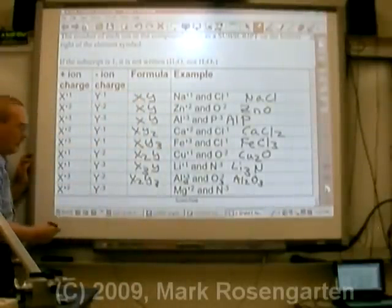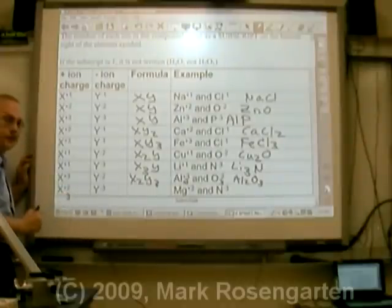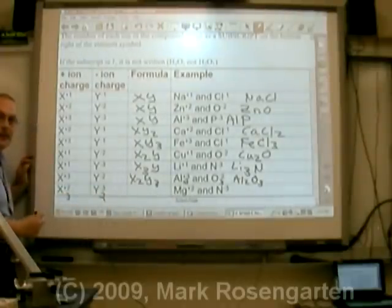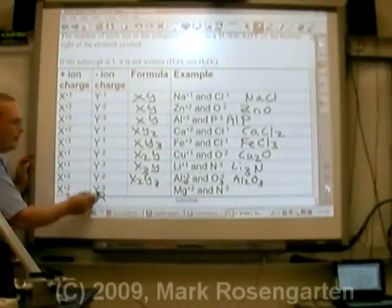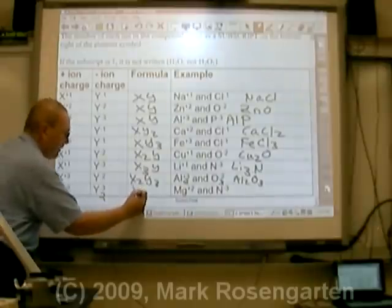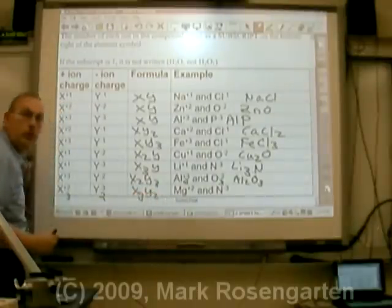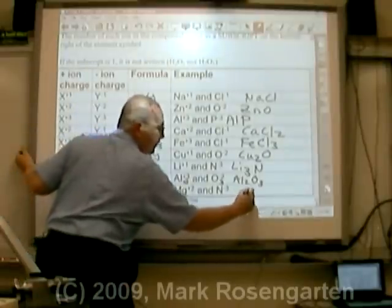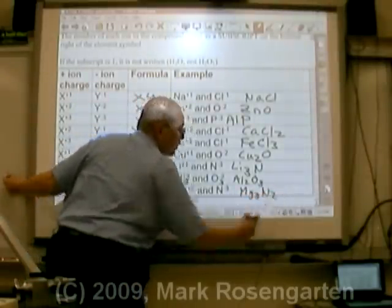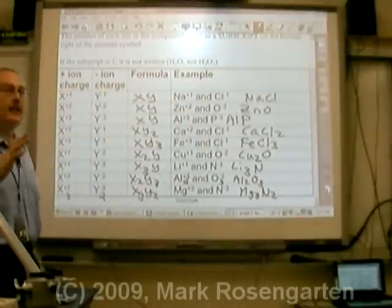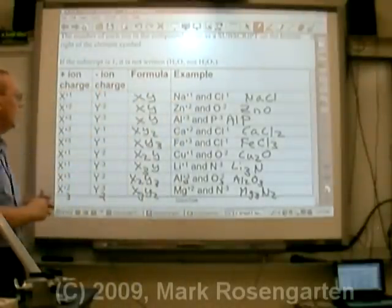Two times three is six. So we're going to need three of the plus twos and two of the minus threes to make plus six and minus six. X3 Y2, Mg3 N2.